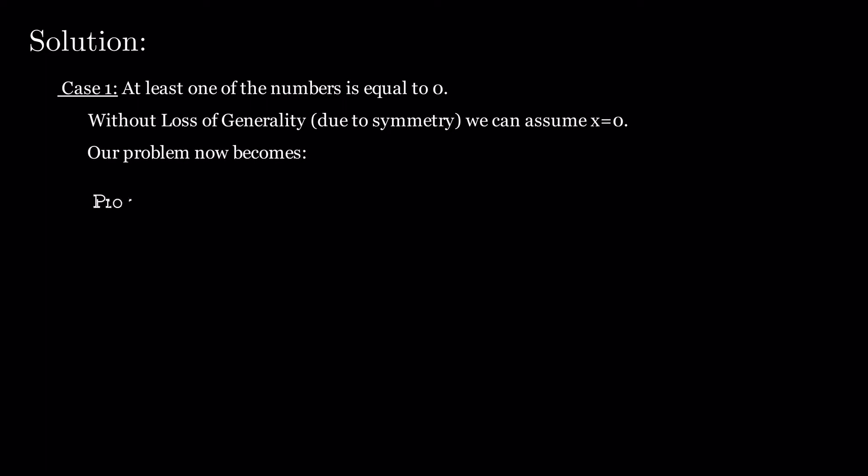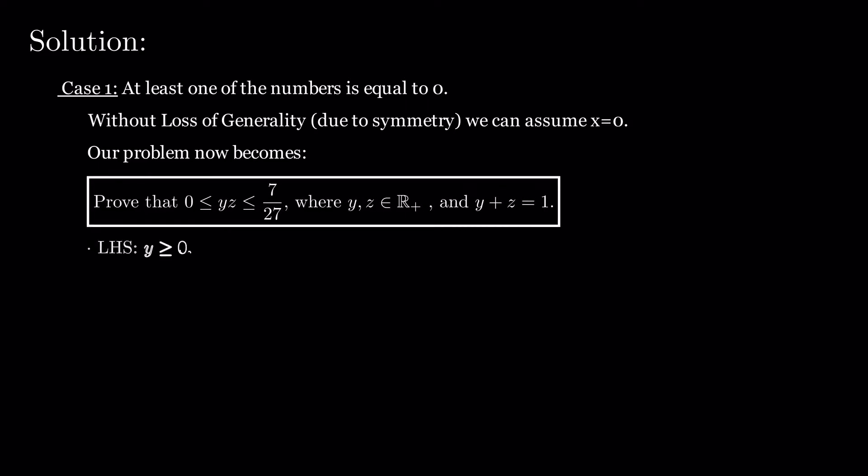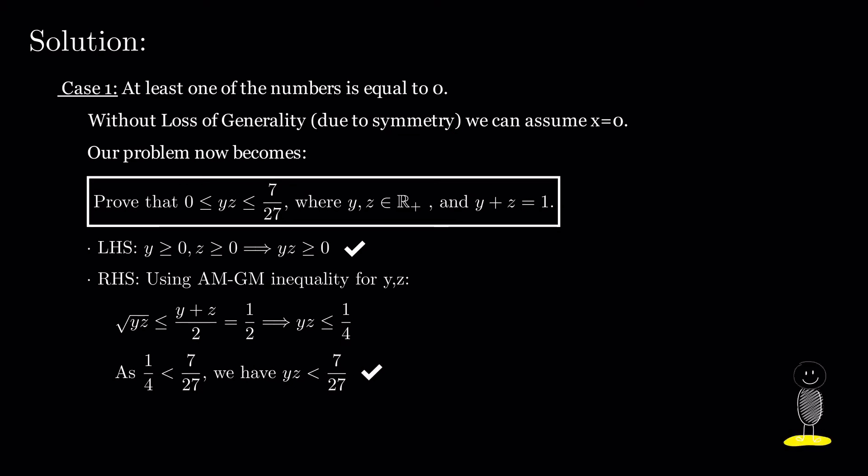Replacing x with 0 in our initial inequality, we arrive at this new problem. The left-hand side is obvious, as both numbers are positive. For the right-hand side, we use the geometric mean-arithmetic mean inequality, which quickly solves it.